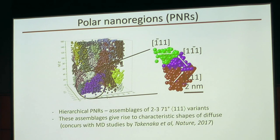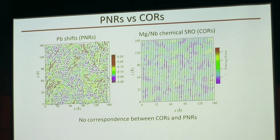We then looked for spatial correlation between PNRs and chemically ordered regions. Using projections of our configuration showing projected column displacements, we observed no actual spatial correspondence between the two. In every case, the size of PNRs was substantially larger than the size of the chemically ordered regions — to the extent that these chemically ordered regions are even well-defined, given the continuous nature of the ordering.